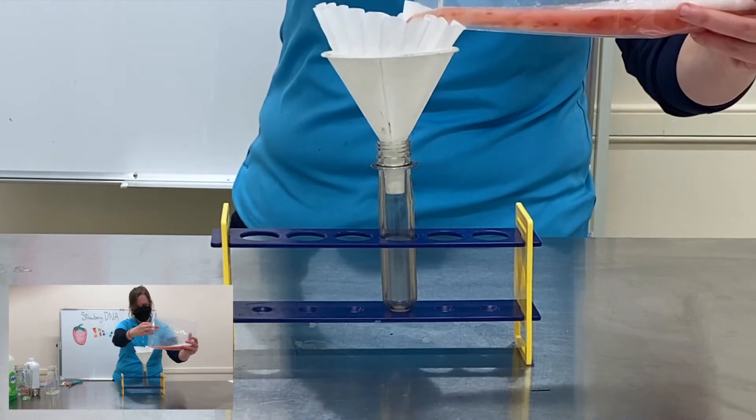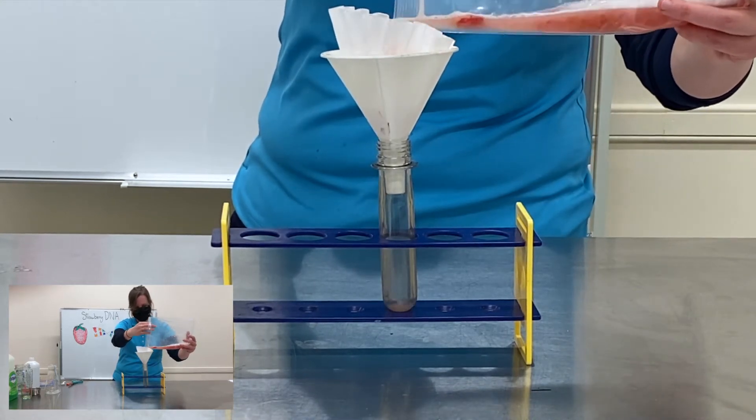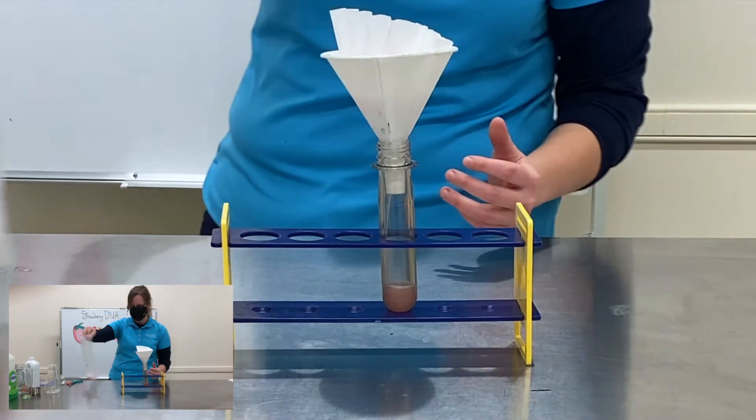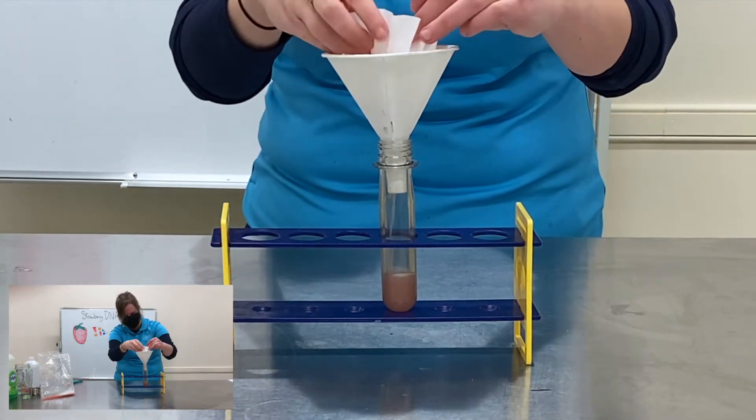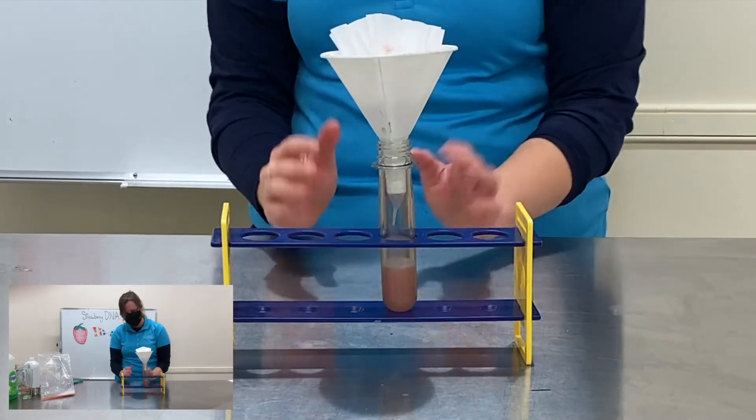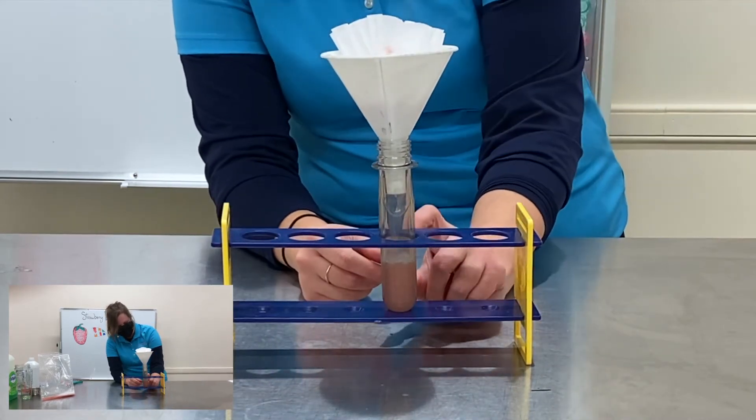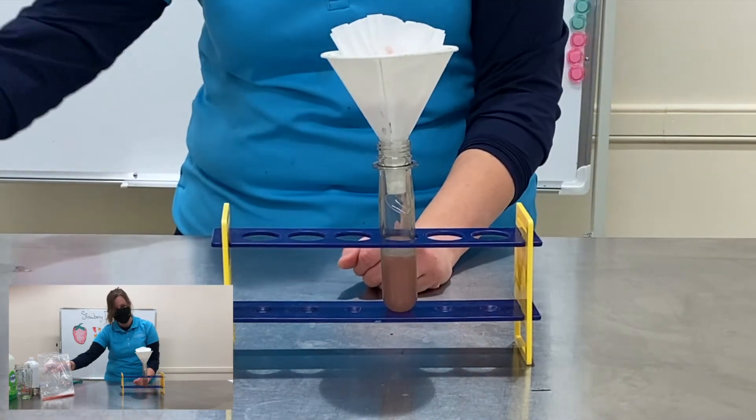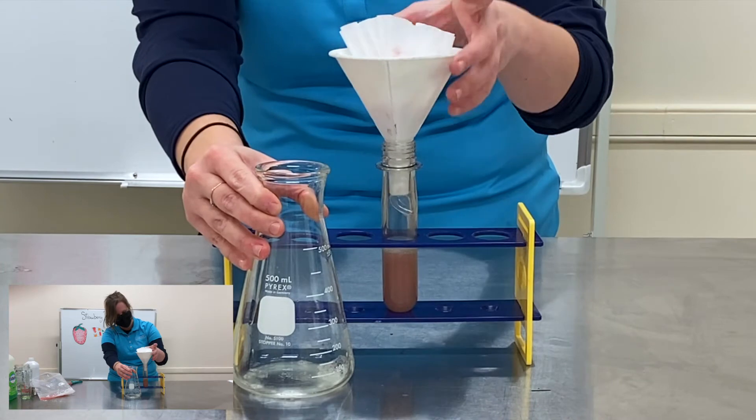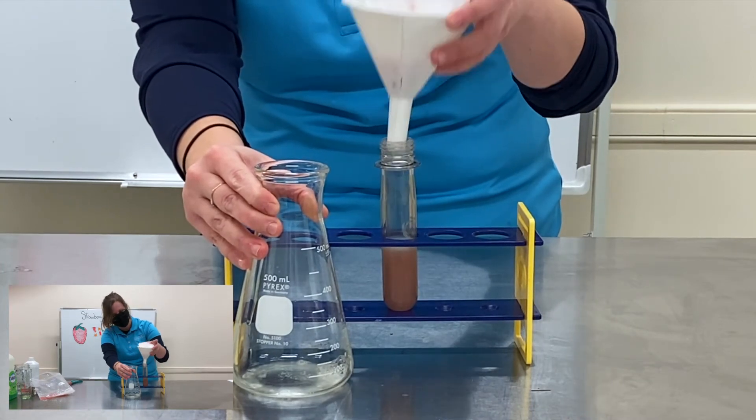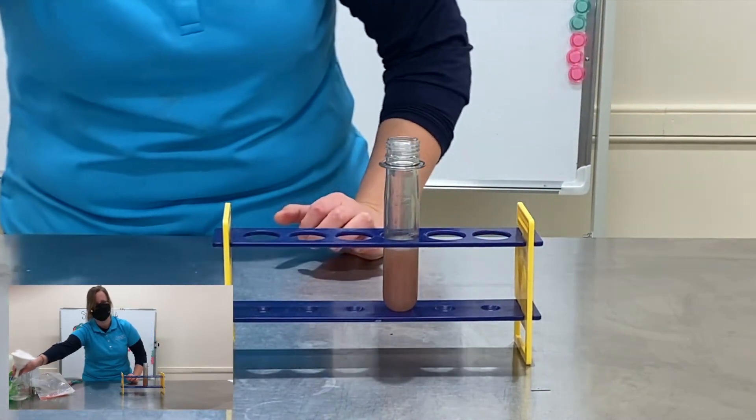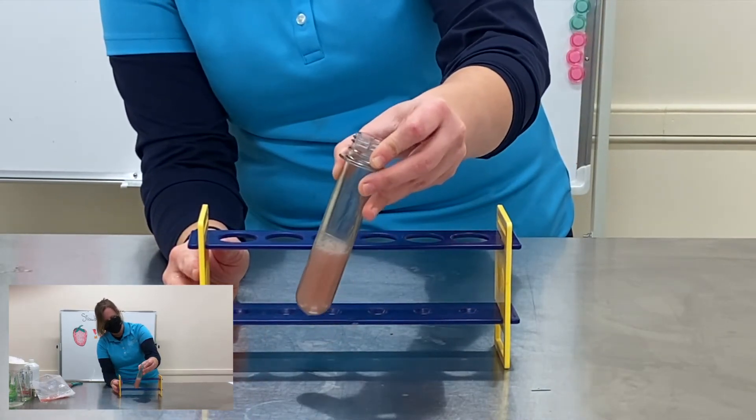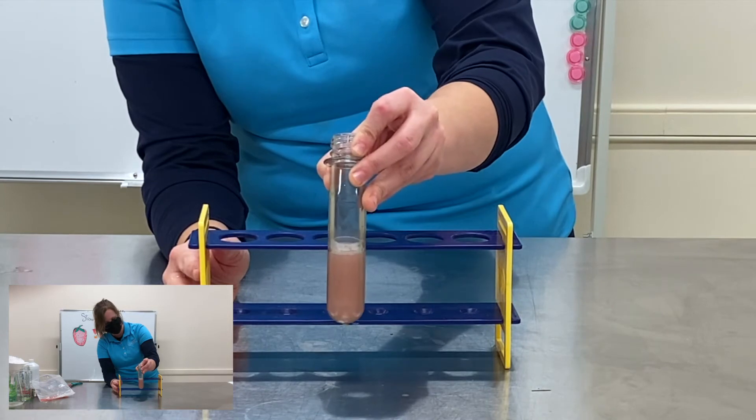So I'm just gonna pour that right in. And we should start to see the liquid enter the test tube. And all of my chunks of strawberry are kind of sitting near the top. And I actually don't need too much. I only need to fill it about halfway. So since I'm already near that point I'm just gonna take that empty jar from earlier, pick up my funnel and filter, and just put it to the side. So now I have my test tube or small glass that's about half full with my strawberry solution.